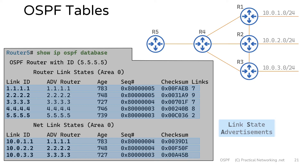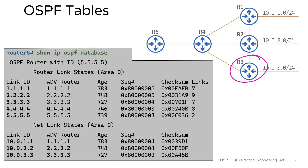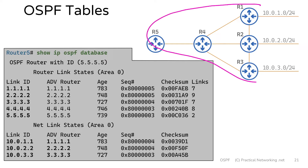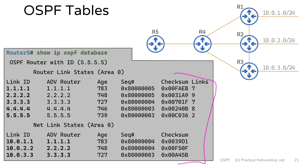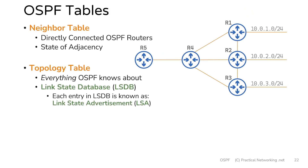One of the benefits of OSPF is that every single router is going to have the same link state database. We know these five routers have converged when they have identical LSDBs. So if you ran this same command on any of the other routers, you would see the exact same LSAs in their LSDB. That would be the definition of a topology table — it's everything that OSPF knows about.